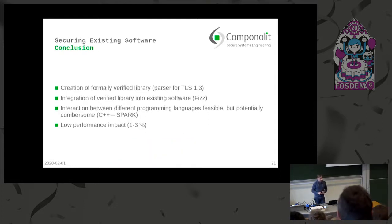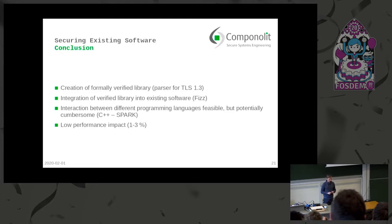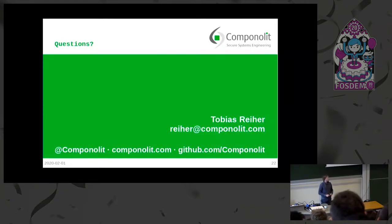Coming to a conclusion: we created a formally verified library — in this case a part of TLS 1.3 — and integrated it into existing software, FIS. We saw some obstacles: it's cumbersome to convert Spark and C++ data structures, but it is possible. And without doing any optimization, the performance impact is really small. So you can conclude it's really possible to use formal verification to secure existing software. Thank you.